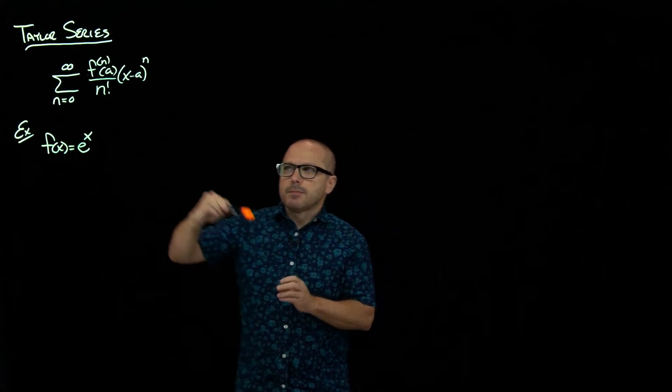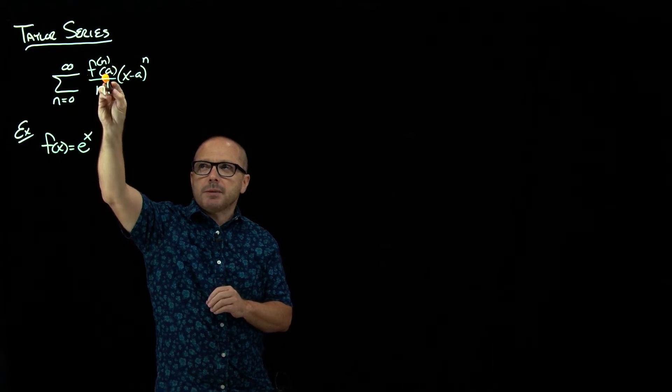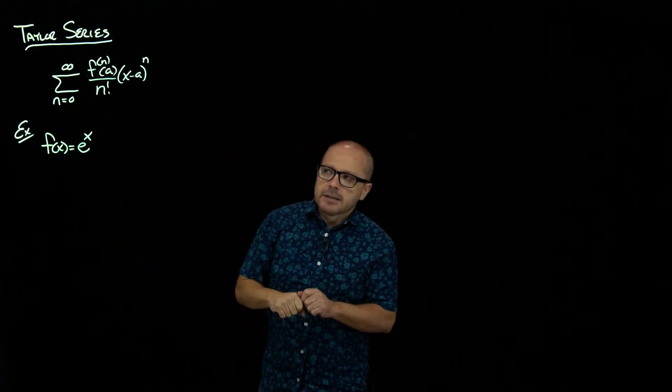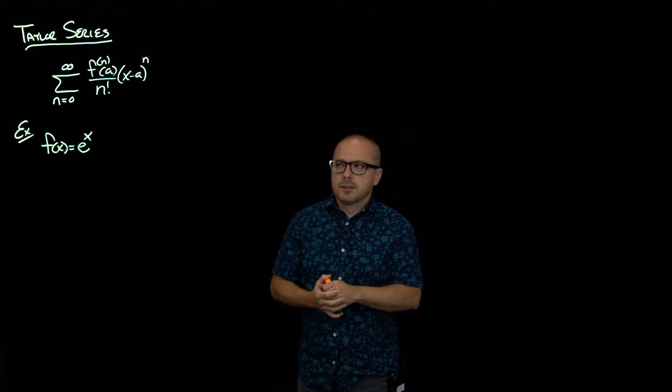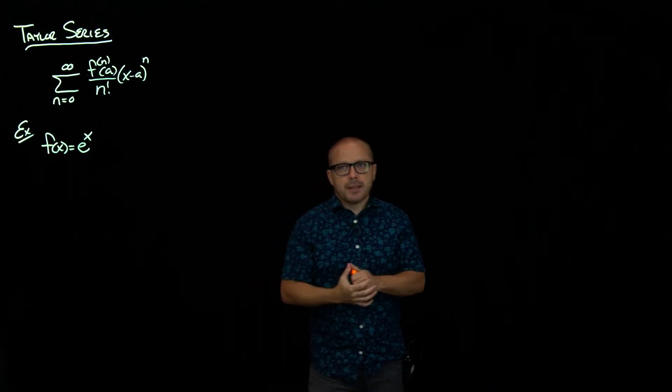And then after we figure out what our A is going to be, then we got to look for a pattern in the derivatives of our function at that point so we can write a nice closed form formula there.